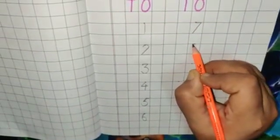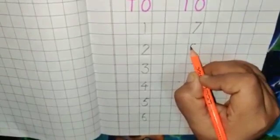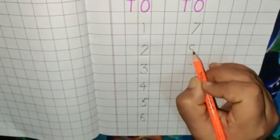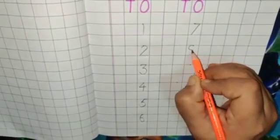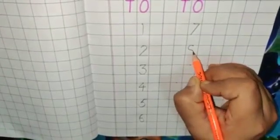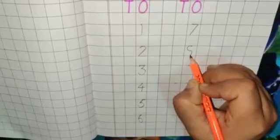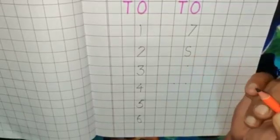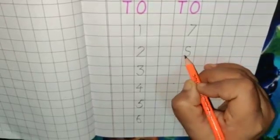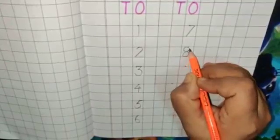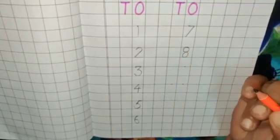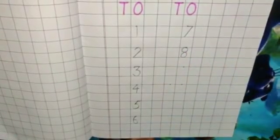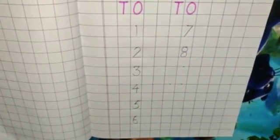For number 8. We will keep pencil on the dot and make a small C like this. Then at the end of the C we will make one more C like this. Then we will take it upward like this. This is number 8.